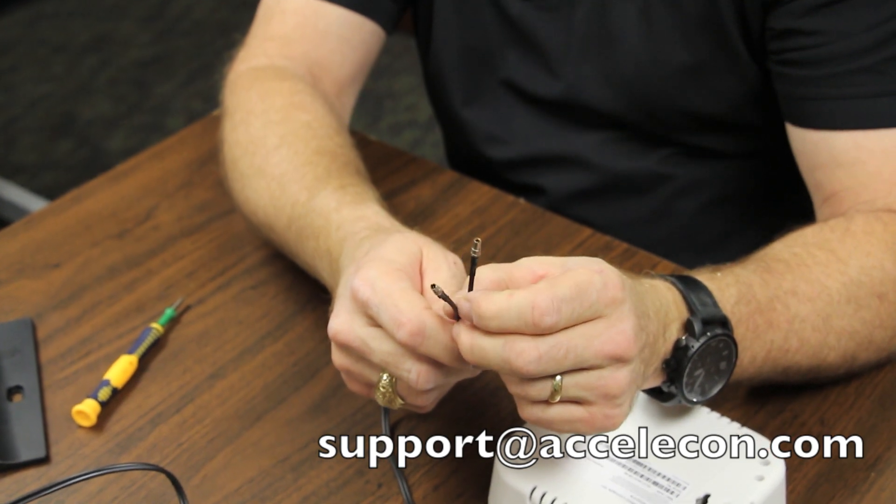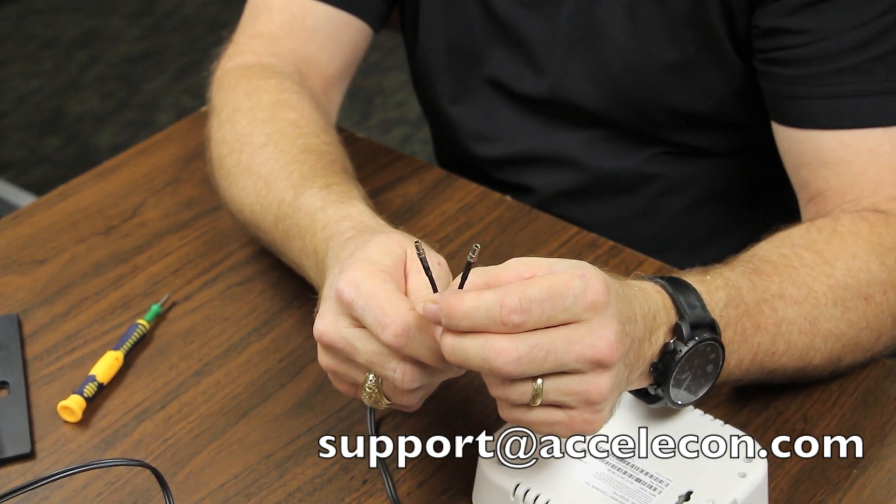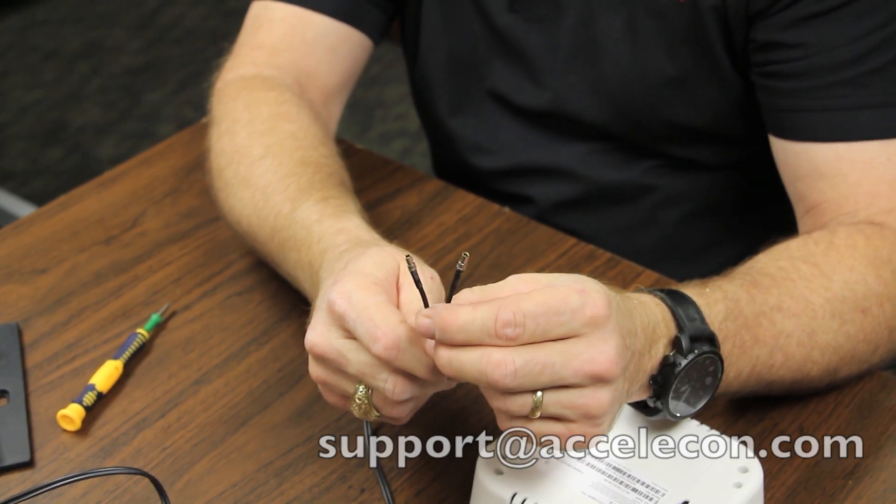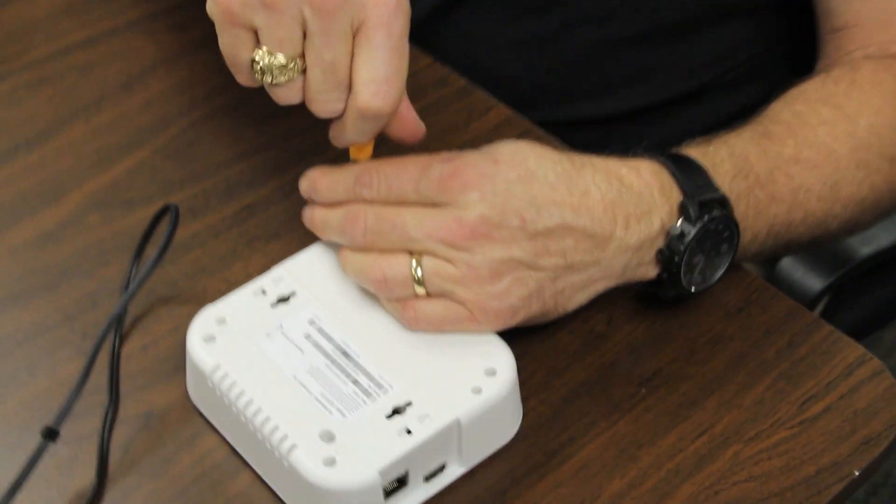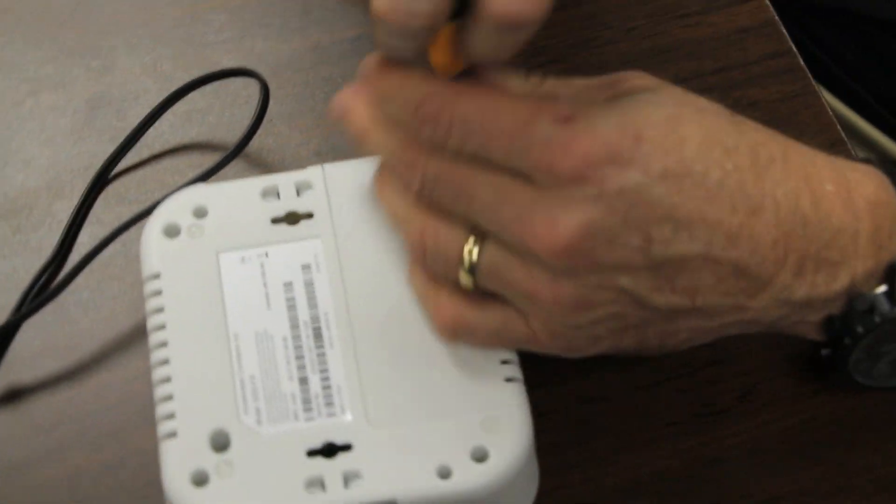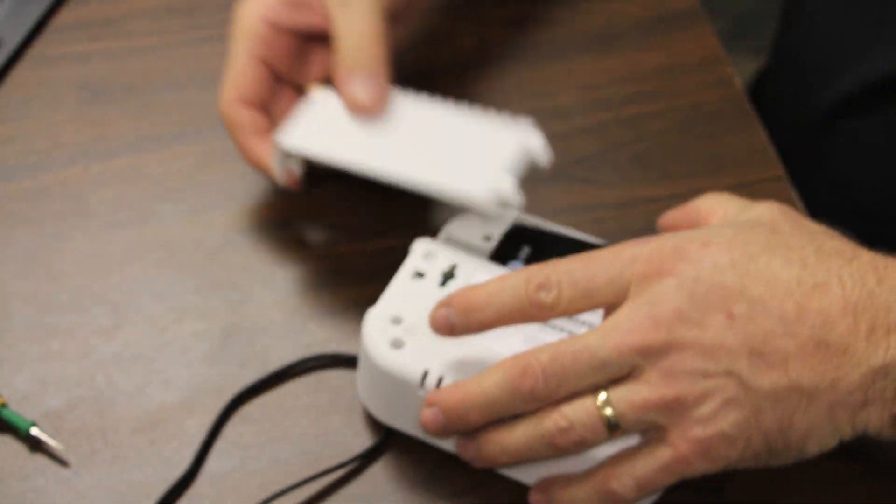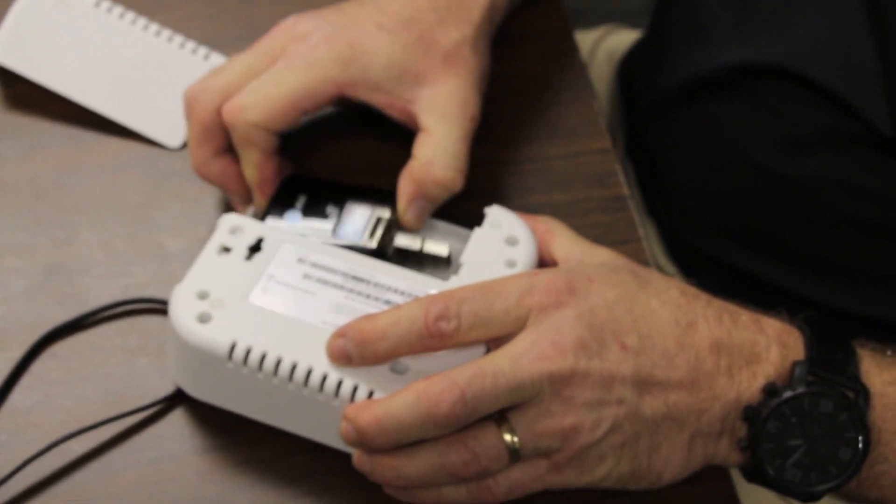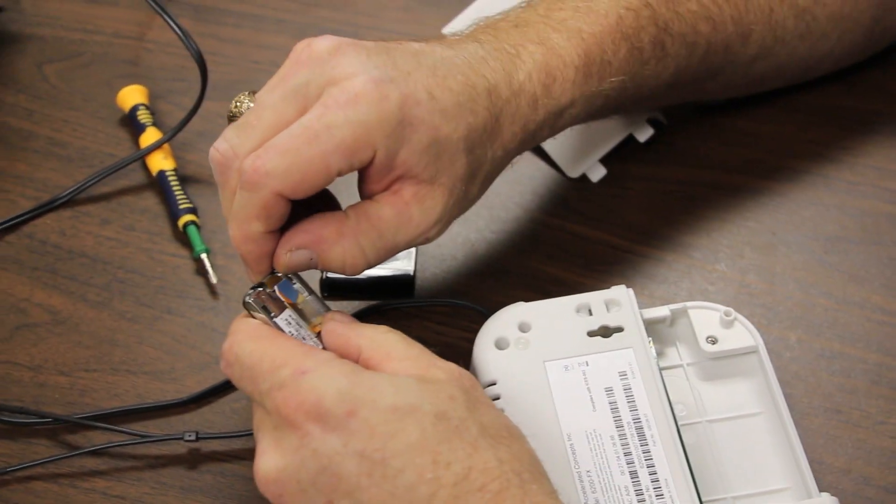If you have any questions, again, please reach out to us at support at accelacon.com. That is A-C-C-E-L-E-C-O-N dot com. Let's go ahead and show you how to install this. Step one is we need to open up the case. We already prior put the radio inside of the case. Pull the radio out. The radio has two little ports in it.